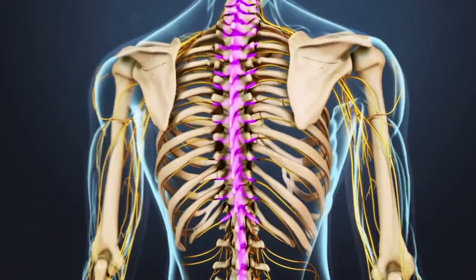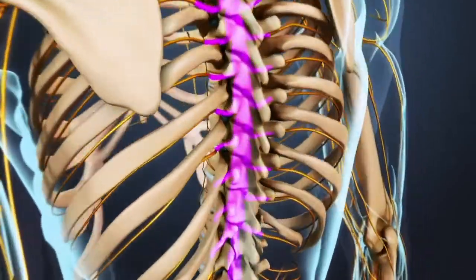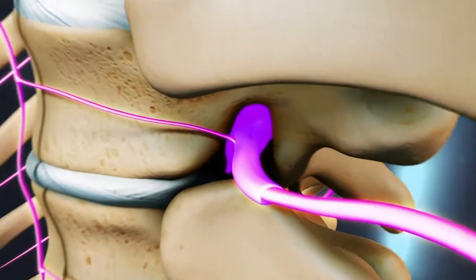In the center of the thoracic spine, the spinal cord travels through the spinal canal, and at each vertebral level, a nerve root exits the canal.